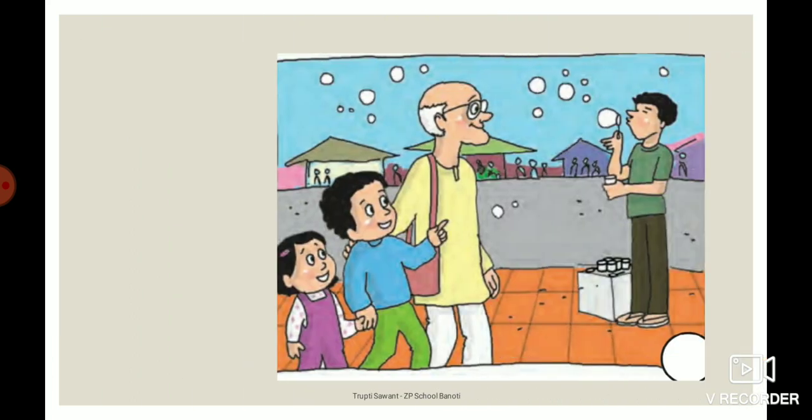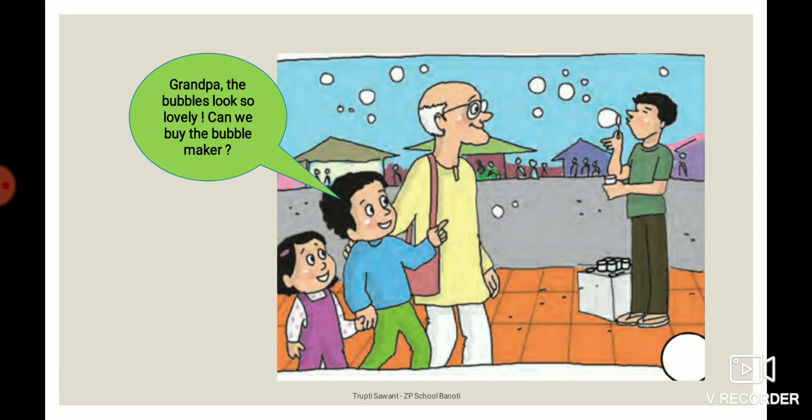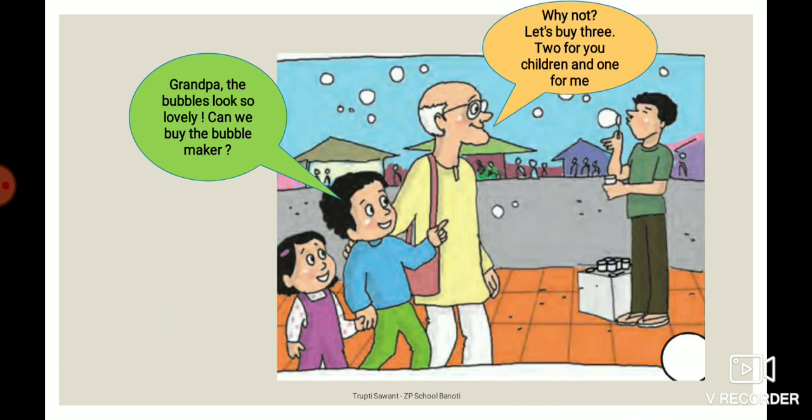Look at this next picture. Here is a grandpa and here are two little children and a bubble maker. You can see bubbles floating in the air. The little boy says, 'Grandpa, the bubbles look so lovely. Can we buy the bubble maker?' Grandpa says, 'Why not? Let's buy three — two for you children and one for me.'